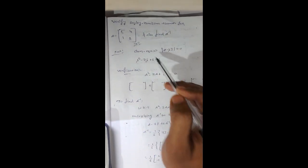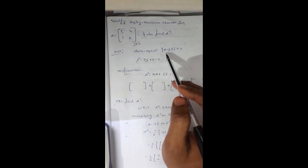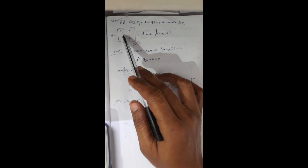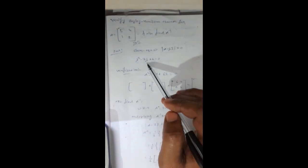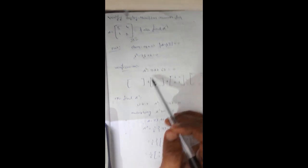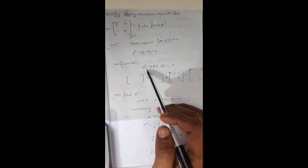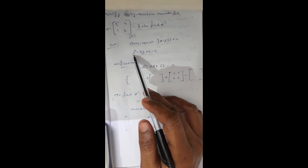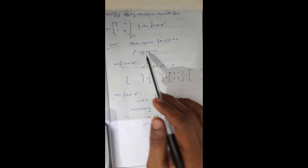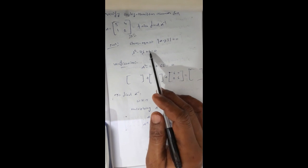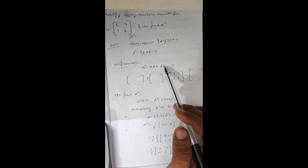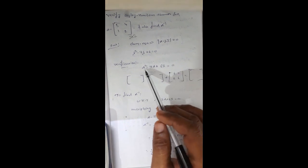The given matrix is 2×2. The characteristic equation is determinant of (A minus lambda I) equal to 0, giving lambda squared minus lambda times trace, which is minus 7, plus determinant, which is 6, equal to 0. For verification, we substitute A in place of lambda, so we evaluate A squared minus 7A plus 6I and check if it equals zero.